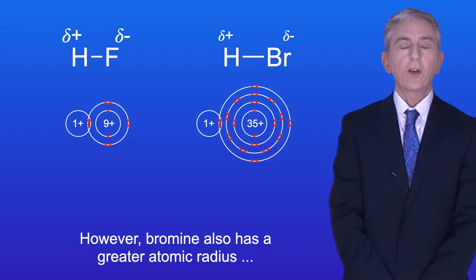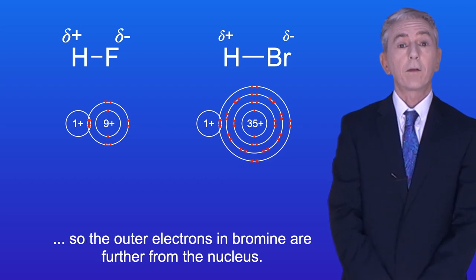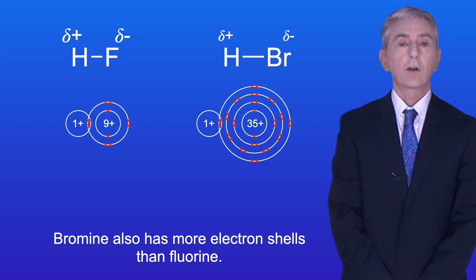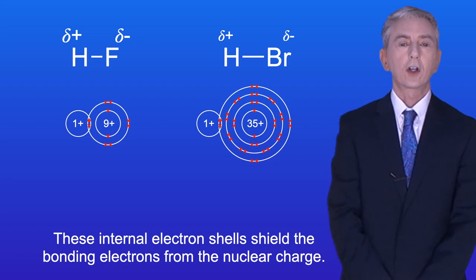However, bromine also has a greater atomic radius, so the outer electrons in bromine are further from the nucleus. Bromine also has more electron shells than fluorine. These internal electron shells shield the bonding electrons from the nuclear charge.